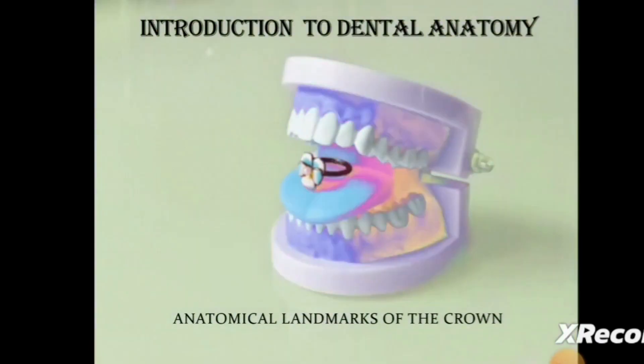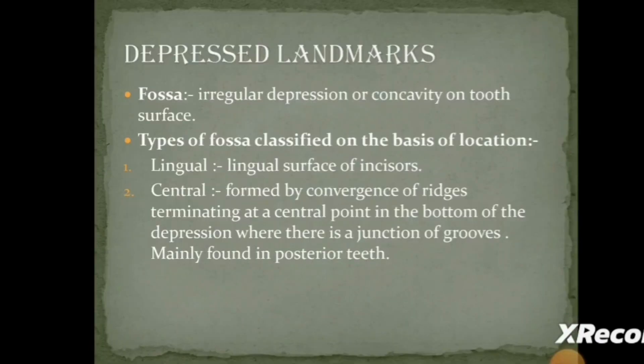Let's begin with the fossa. The fossa is an irregular depression or concavity on a tooth surface. It's like you are digging a hole in the ground with your hands — it's not a definite shape, it's irregular, somewhat circular but irregular.